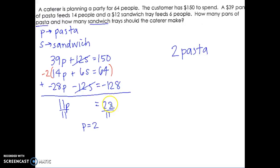I want to know how many sandwich trays. I'm going to plug it back in, pick any one to plug it into. So I'll start with the second one just because the numbers are smaller. So I have 14 times 2 plus 6S equals 64. So that's 28 plus 6S equals 64. Subtract the 28 over, you get 6S equals 36. Divide by 6, and S equals 6. So there are 6 sandwich trays.